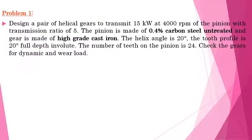Coming to the numerical on helical gears, let's see one problem. Design a pair of helical gears to transmit 15 kW at 4000 rpm of the pinion, with a transmission ratio of 5. The pinion is made of 0.4% carbon steel, untreated, and the gear is made of high grade cast iron. The helix angle is 20 degrees. The tooth profile is 20 degree full depth involute. The number of teeth on the pinion is 24. Check the gears for dynamic and wear load.